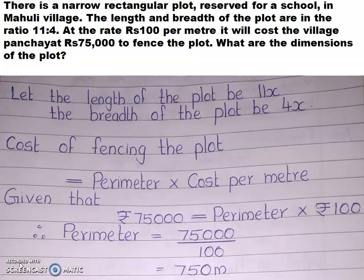Now, fencing the plot. Students, you are in the plot and you are going to fence it. What happens when you are fencing the plot? You are going to fence along the boundary of the plot. That means you are fencing around the perimeter. That is the word indirectly given in your question — perimeter of a rectangular plot.